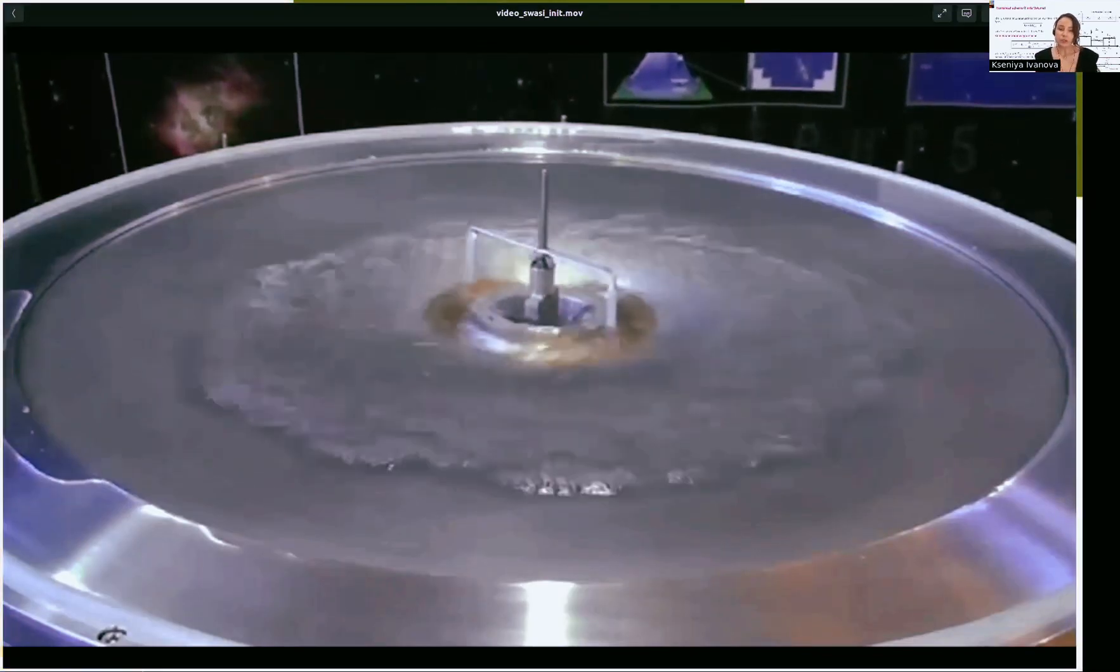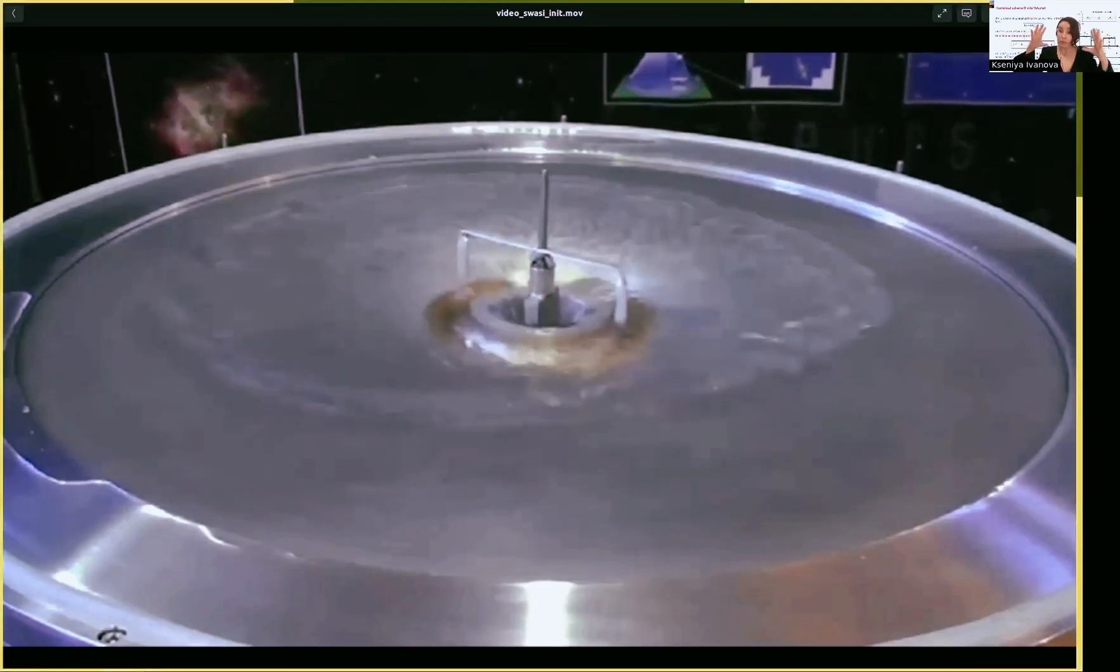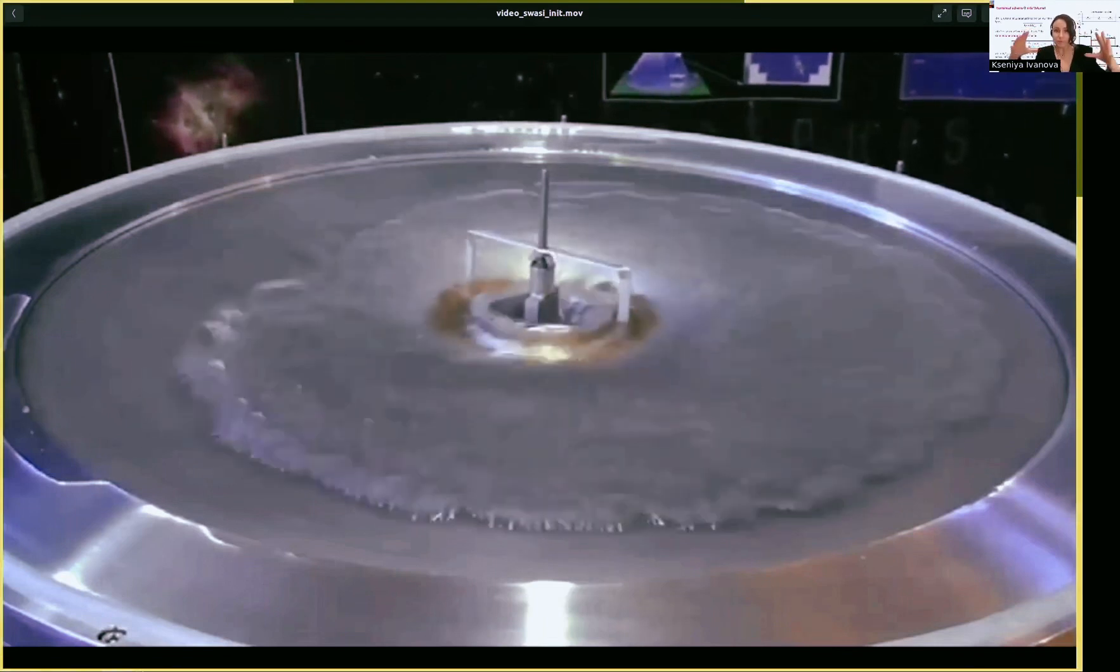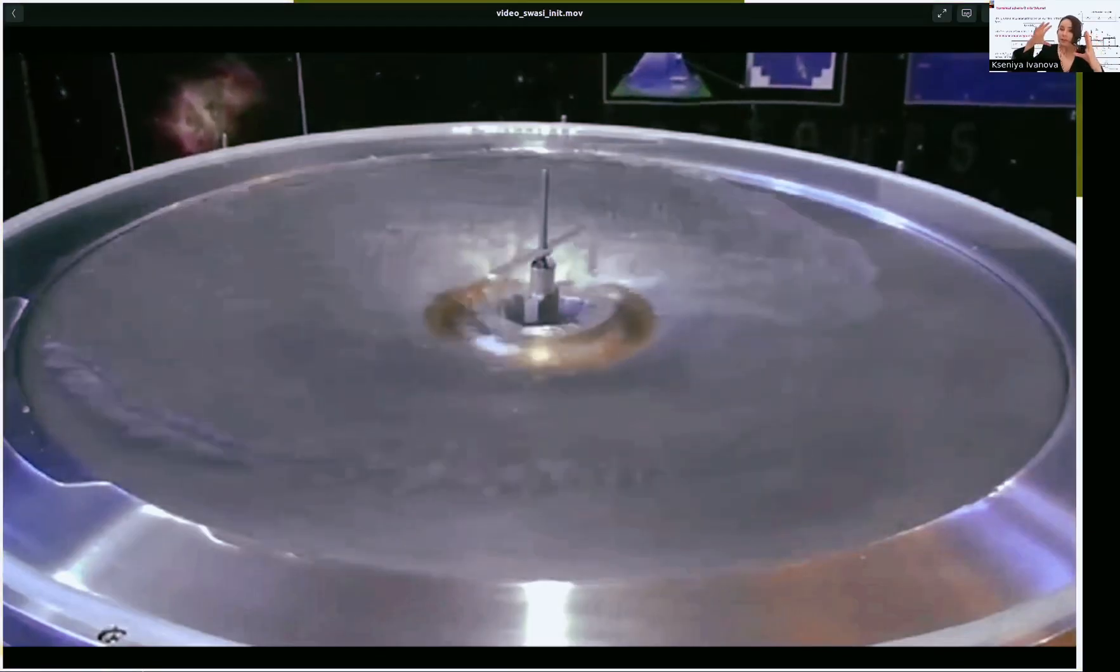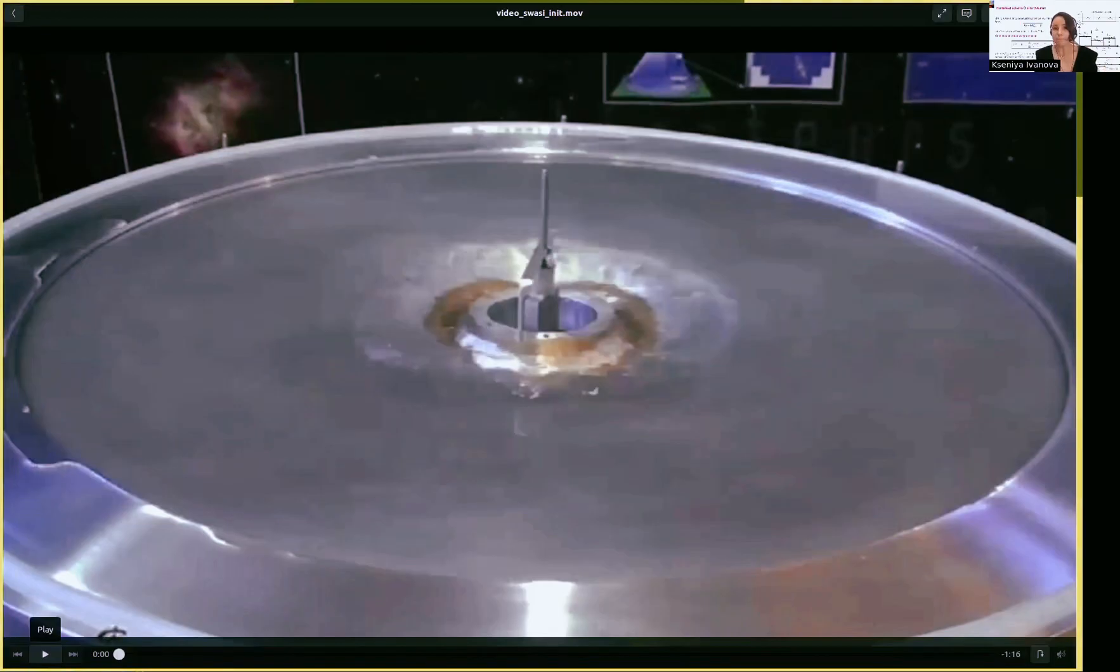Now imagine that you have a dying star and it starts to collapse. It's collapsing, collapsing like this water here in the convergent flow. And then it collapses until some limit and then an explosion and supernova forms. So this is an example of shock wave instability.